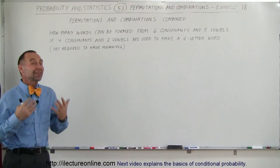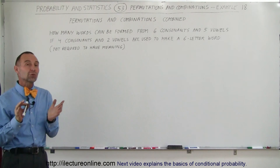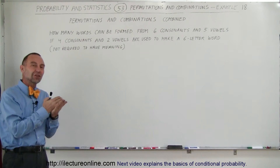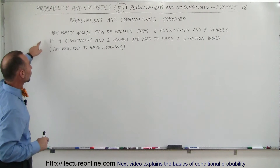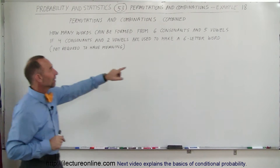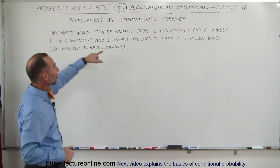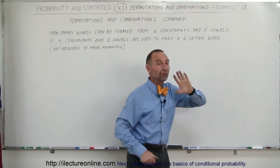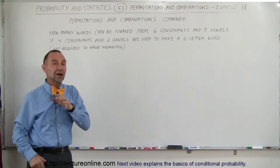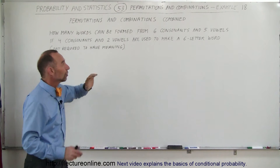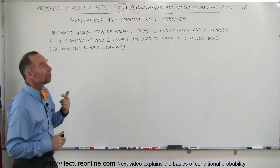Welcome to our lecture online. We're going to do a rather complicated example where we have to combine both the number of permutations and the number of combinations to come out with the total number of permutations possible. We're asking how many six-letter words can be formed if you can choose from six available consonants and five available vowels, with the restriction that four need to be consonants and two need to be vowels.